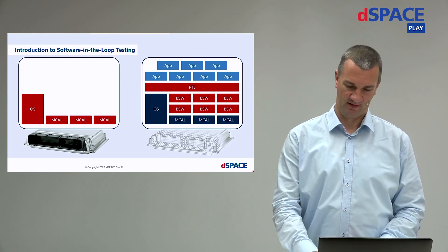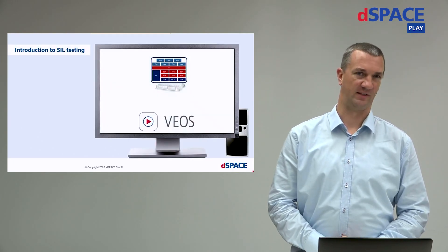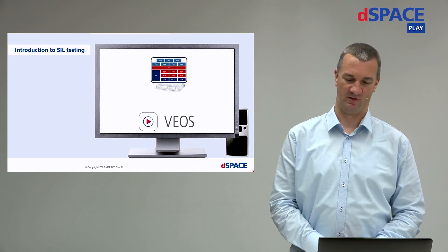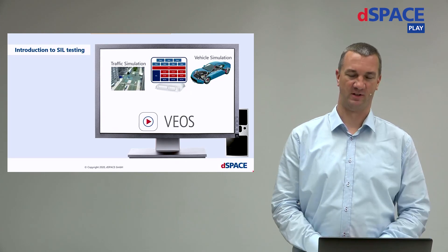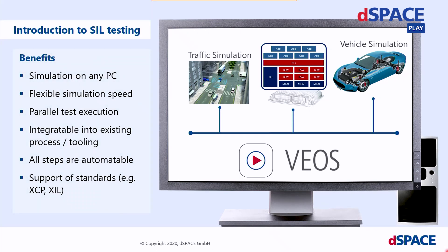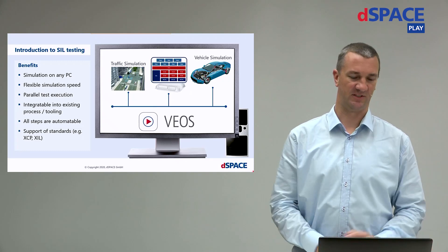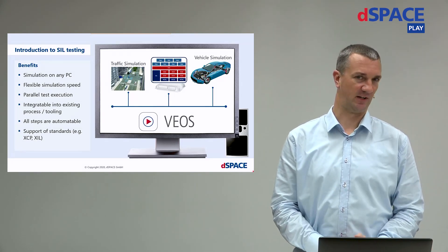The next step is to use this virtual ECU and let it run on an offline simulator — for example, the VEOS tool from dSpace. To close the loop, you add additional components to the simulation, such as a vehicle simulation or traffic simulation. Put everything together and you have a software-in-the-loop test environment. The benefits include using a standard PC, being flexible in simulation time, and running tests in parallel.